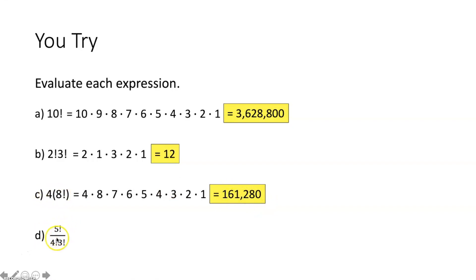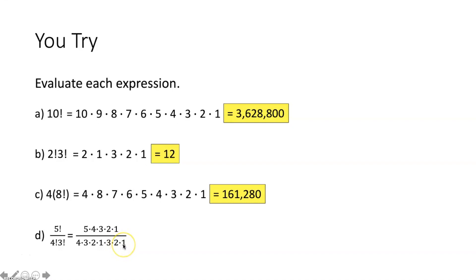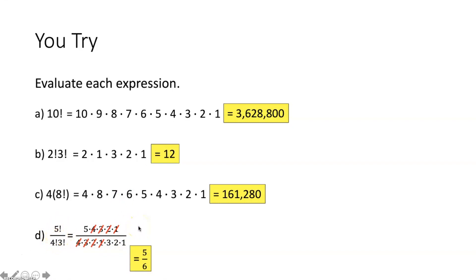Part D — five factorial over four factorial times three factorial. Expanding: numerator is five times four times three times two times one; denominator is four times three times two times one, times three times two times one. The fours, threes, twos, and ones cancel, leaving five over six.